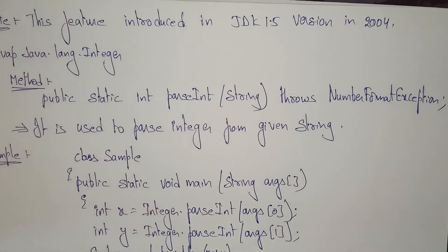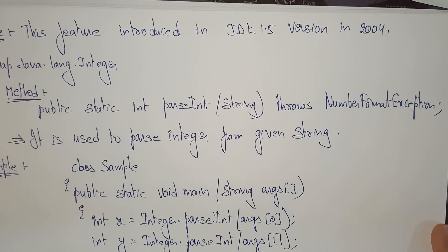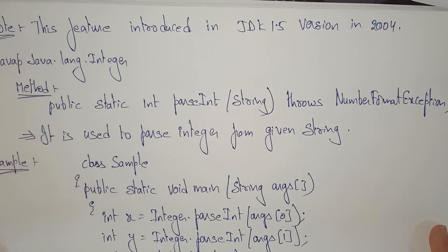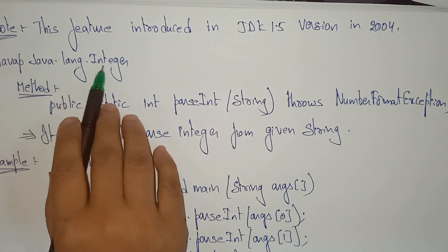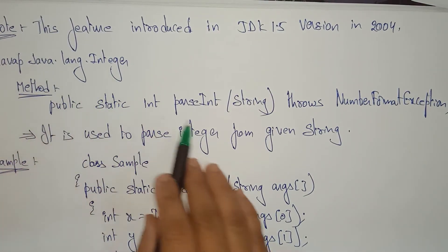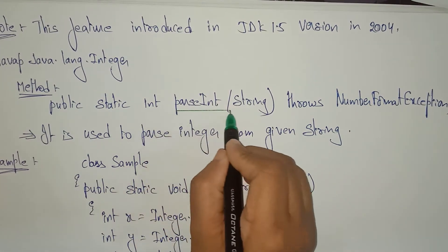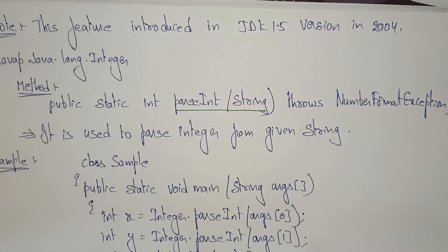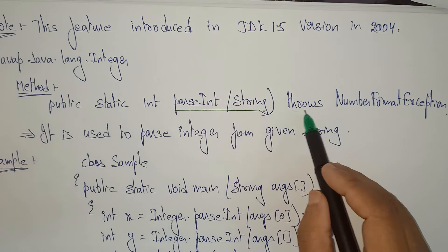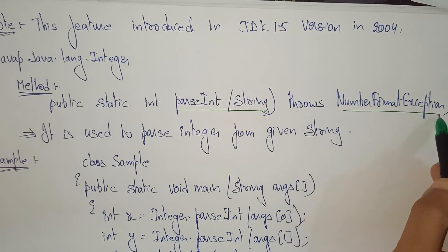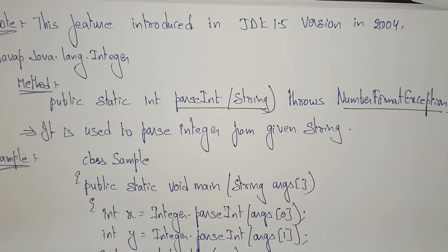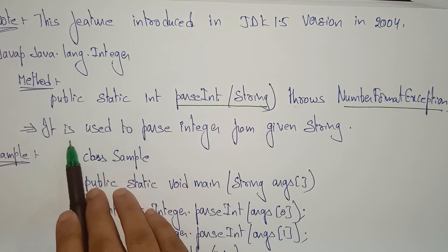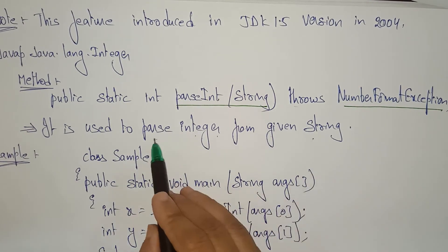This feature was introduced in JDK 1.5 in 2004. Another example: using javap java.lang.Integer, I took the method parseInt. Whatever string I pass in the main method, that string I am converting using parseInt. If the value is not valid, it throws a NumberFormatException.